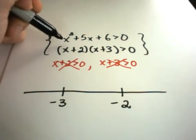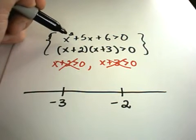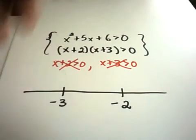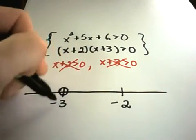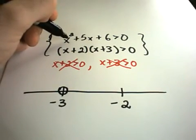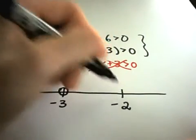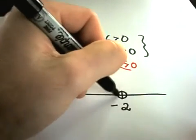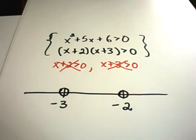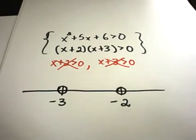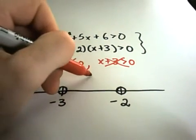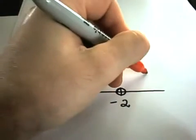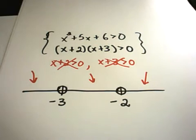If you plug negative 3 into the inequality, the left side gives 0. Is 0 greater than 0? It's not, so we put an open circle at negative 3 to show it does not satisfy the inequality. Likewise, plugging in negative 2 also gives 0 on the left side, and 0 is not greater than 0, so we put an open circle there too. Now you must take a number from each interval: numbers less than negative 3, numbers between negative 3 and negative 2, and numbers greater than negative 2.